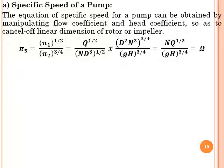Flow coefficient π1 = Q/(ND³) raised to the power of 1/2, and head coefficient π2 = GH/U² where U² = D²N². Taking π2 to the denominator with power 3/4, and simplifying this expression, the diameter D cancels out. In the numerator, only speed N and discharge Q to the power 1/2 remain; the denominator is (GH)^(3/4).